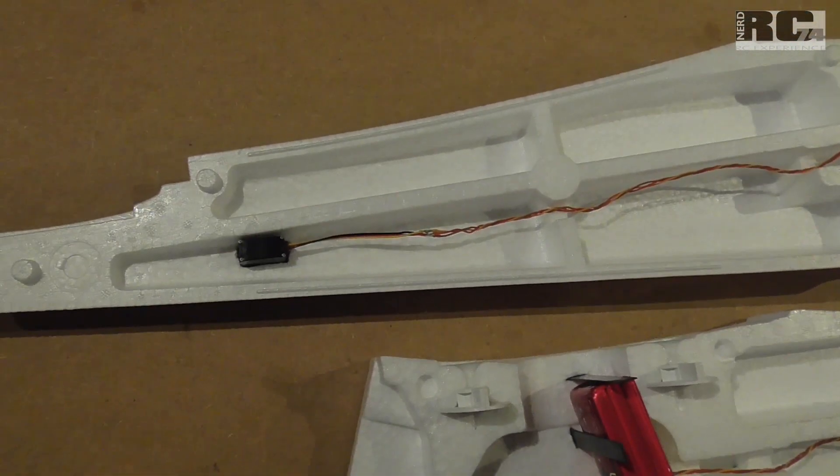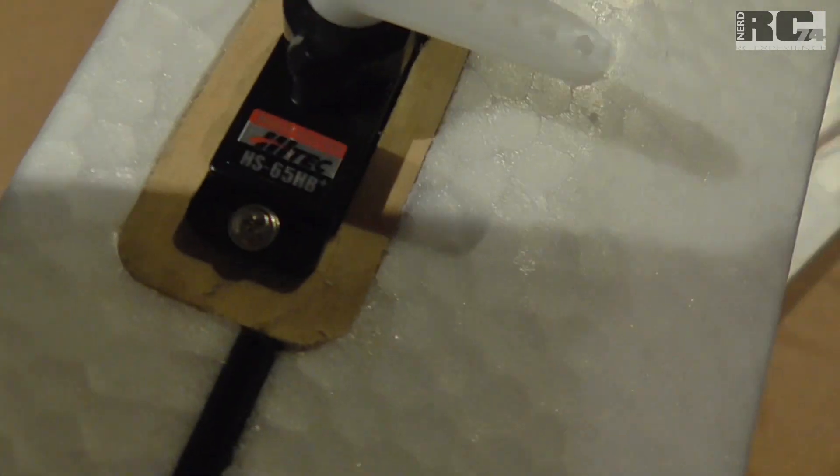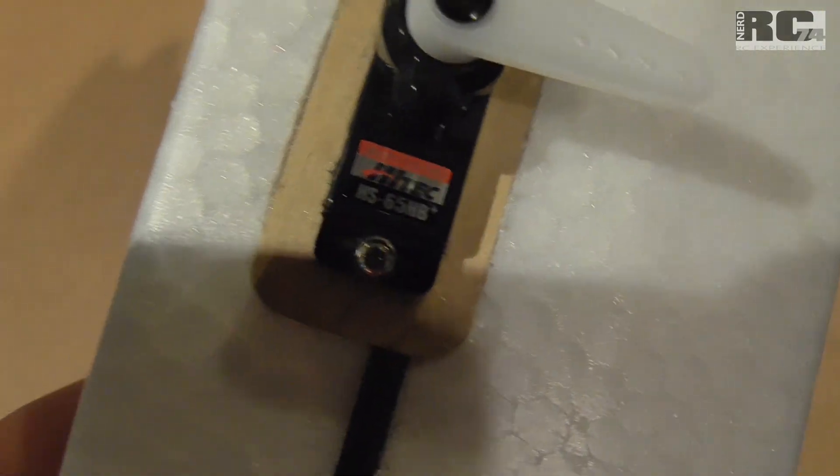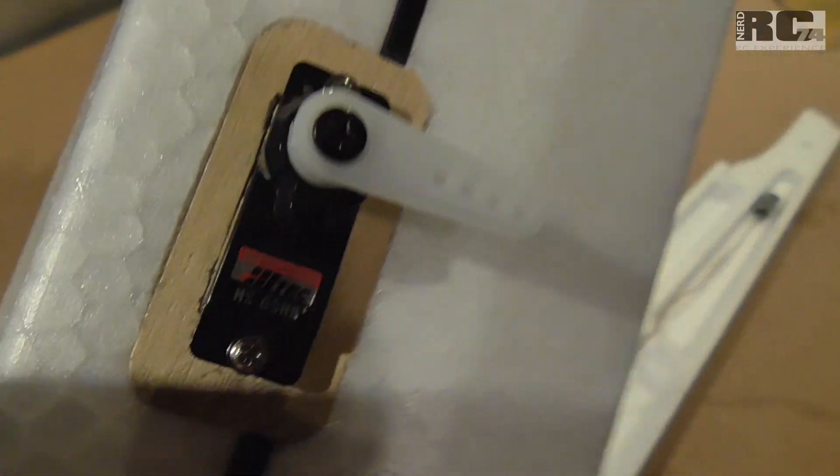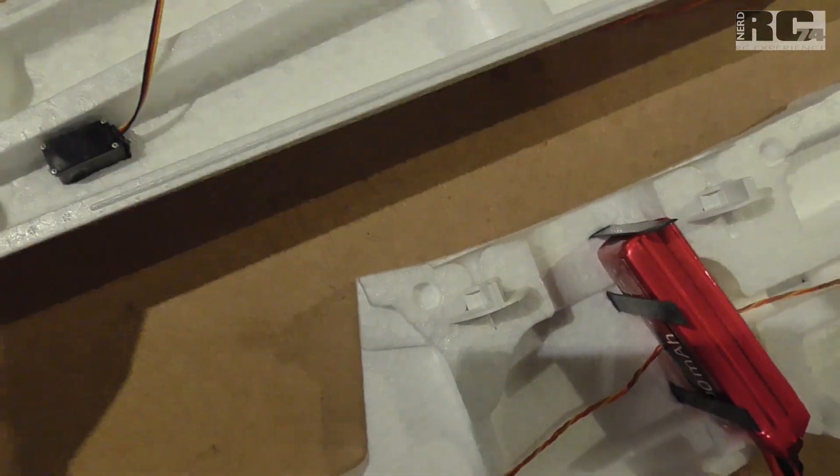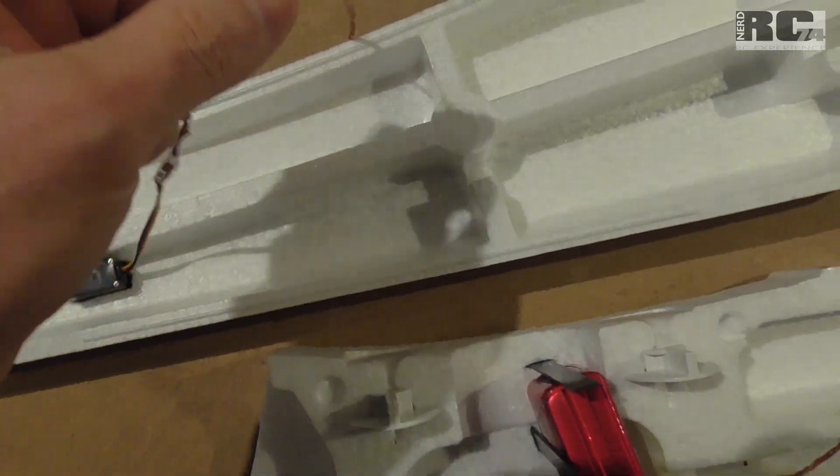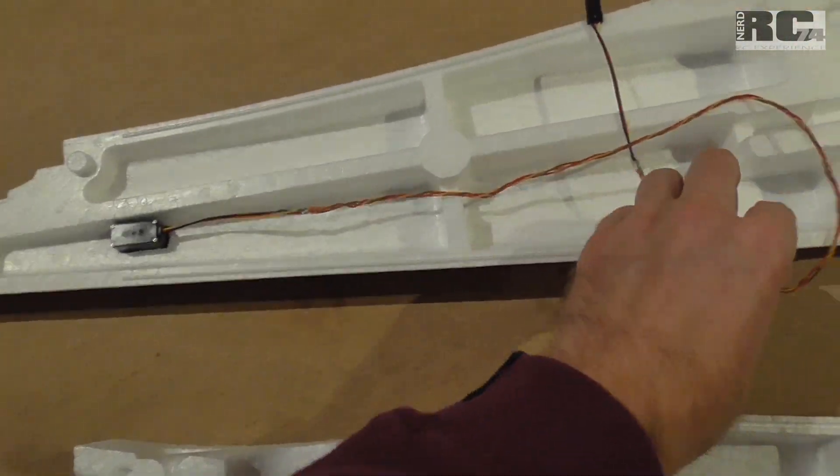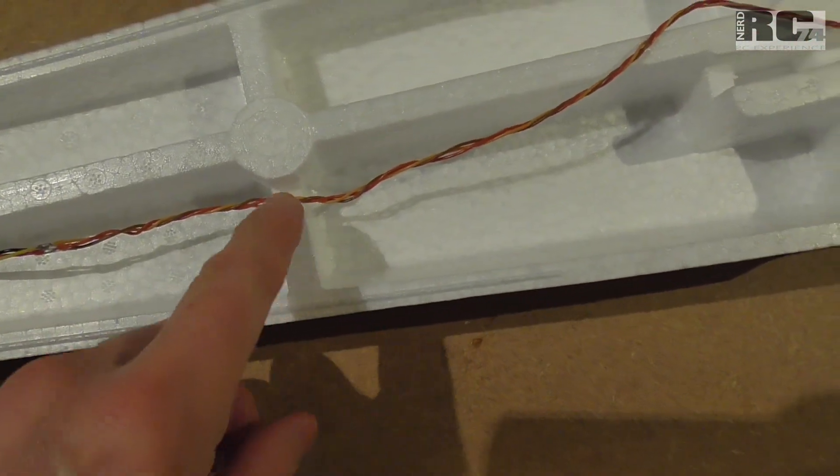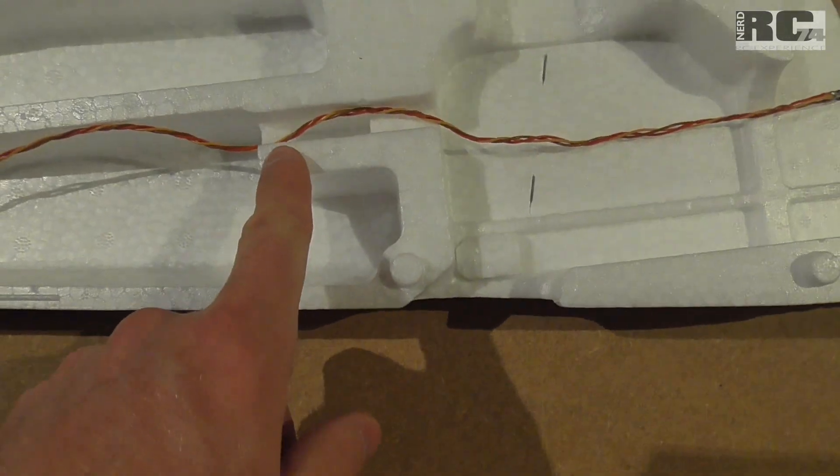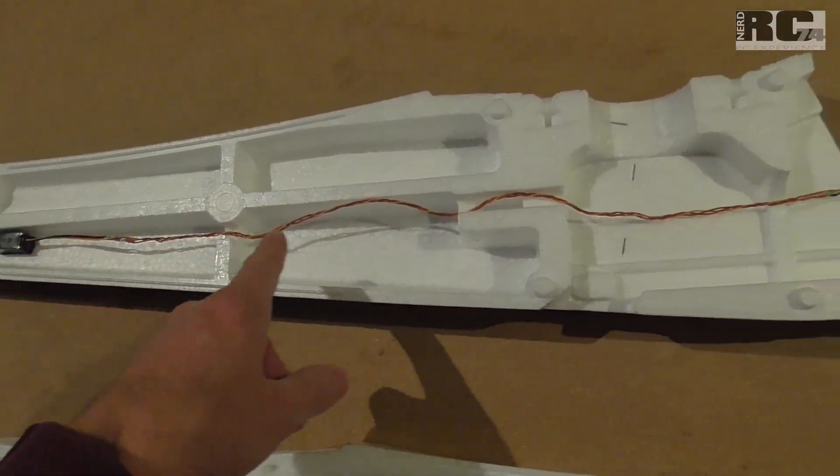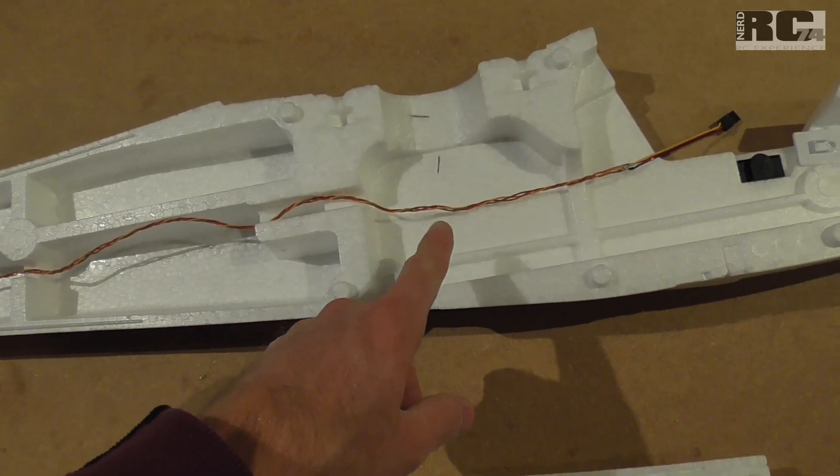First let's have a look at the servo position. I use Hitec servos, the HS-65HB, and that's how I installed it. What I had to do is just cut out some foam at this point here and at this point here just to make it possible to run the wire through the whole fuselage.